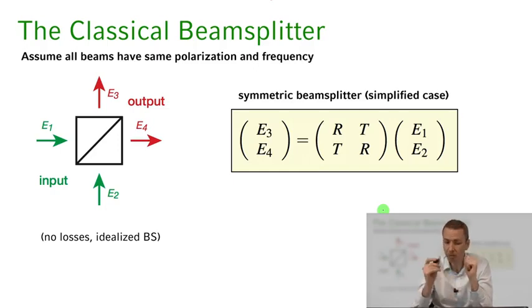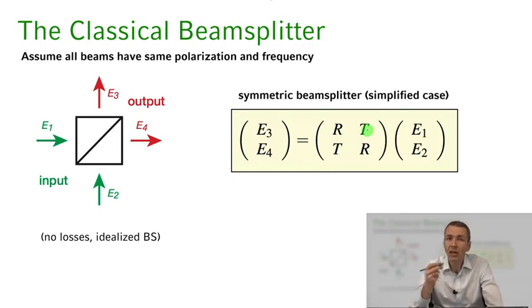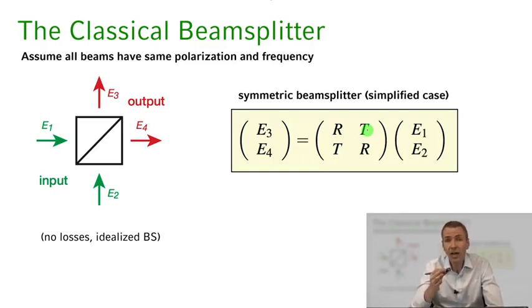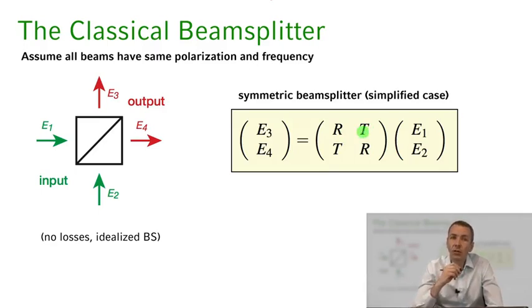Next we simplify to the case of the so-called symmetrized beam splitter, where the reflection coefficients and transmission coefficients are exactly the same for both ports. We now need to ask what conditions r and t must fulfill with respect to each other.